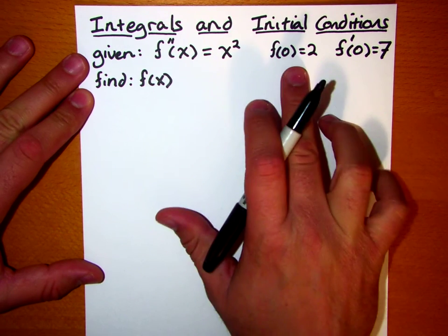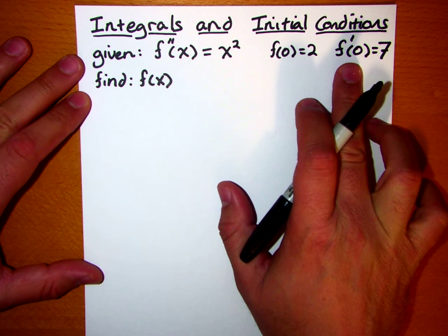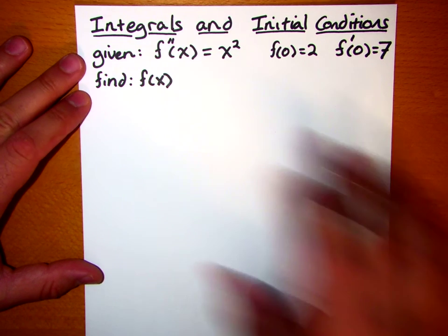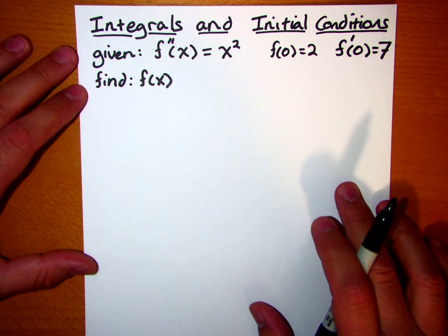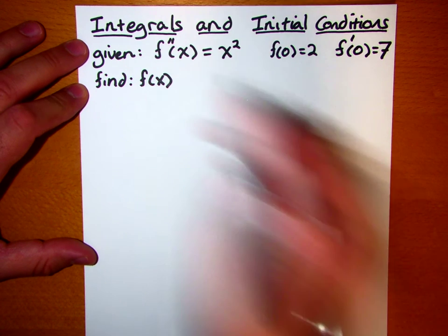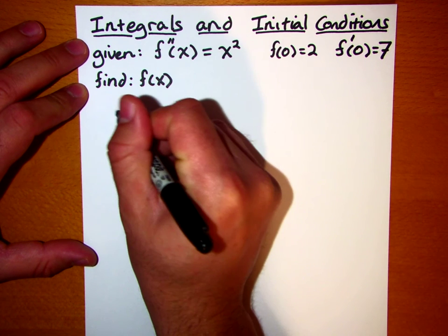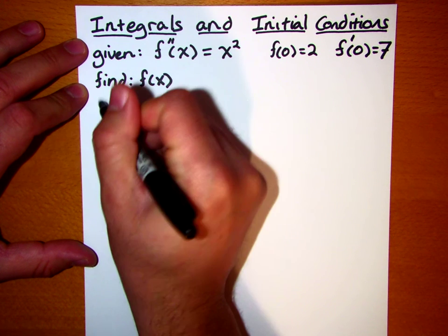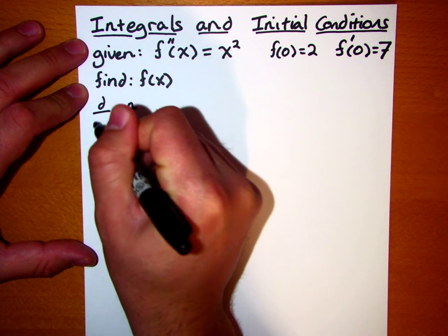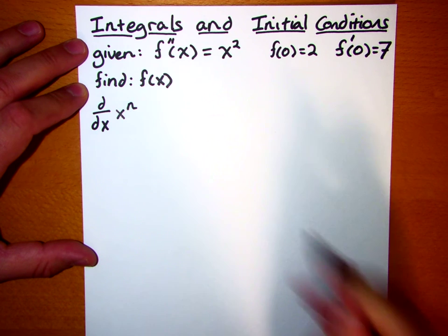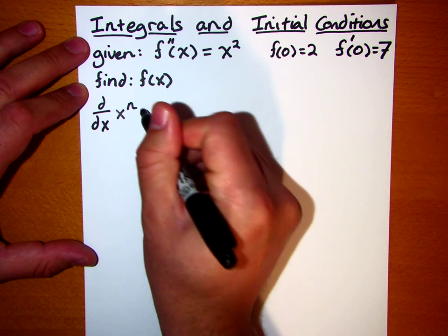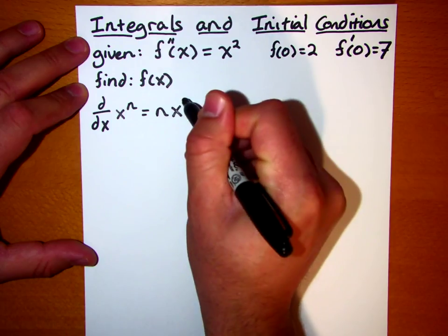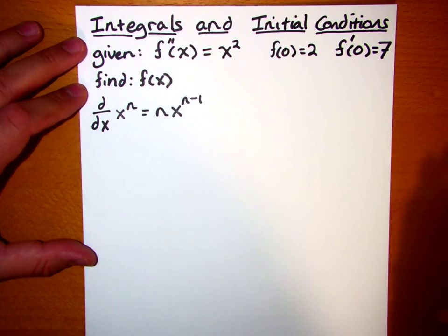Alright, well let's ignore the initial conditions for just a moment and take a look at the function here, f double prime of x equals x squared. What we're going to use here is the power rule, and if you remember from differentiation, if you've got a function x to the n, the derivative of that with respect to x is equal to n times x to the n minus 1 power.